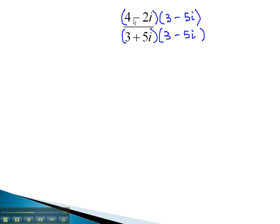Remember, we must multiply the entire numerator by the 3 minus 5i, which will require us to use FOIL. 4 times 3 is 12, and 4 times negative 5i is negative 20i. Negative 2i times 3 is negative 6i, and negative 2i times negative 5i is positive 10i squared.